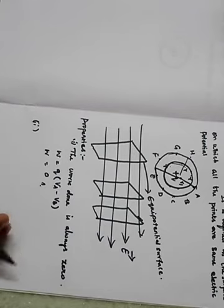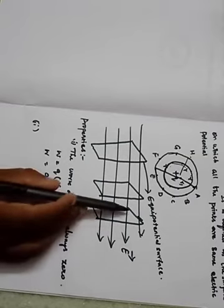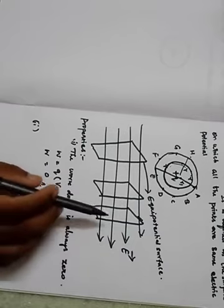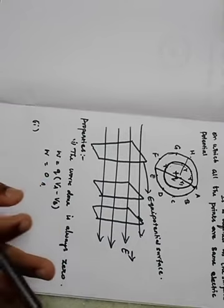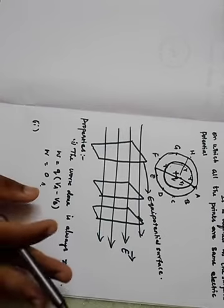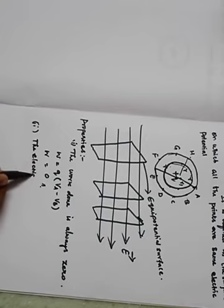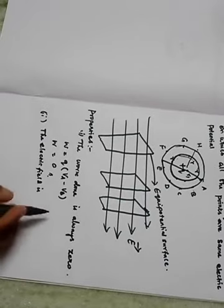The second property: the electric field is always normal to the equipotential surface. If it were not normal, there would be a component of the field parallel to the surface, and work would have to be done to move a charge between two points on the same surface — which is a contradiction. Therefore, the electric field must always be normal to the equipotential surface.